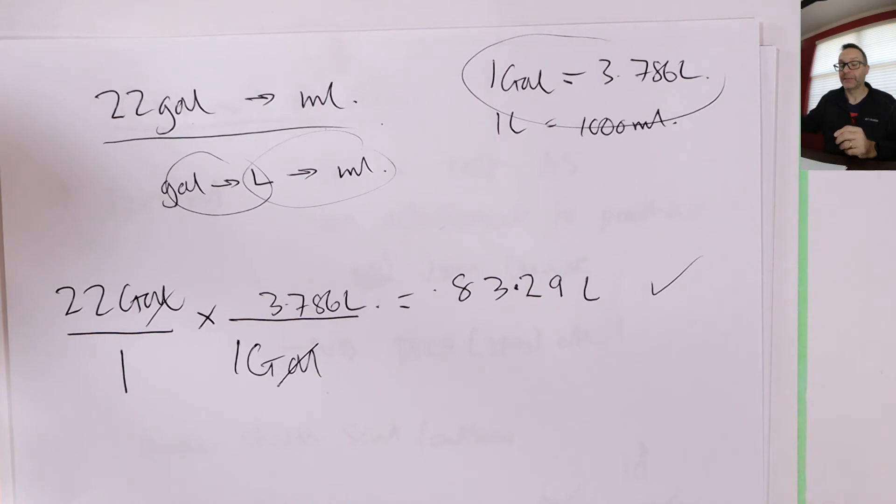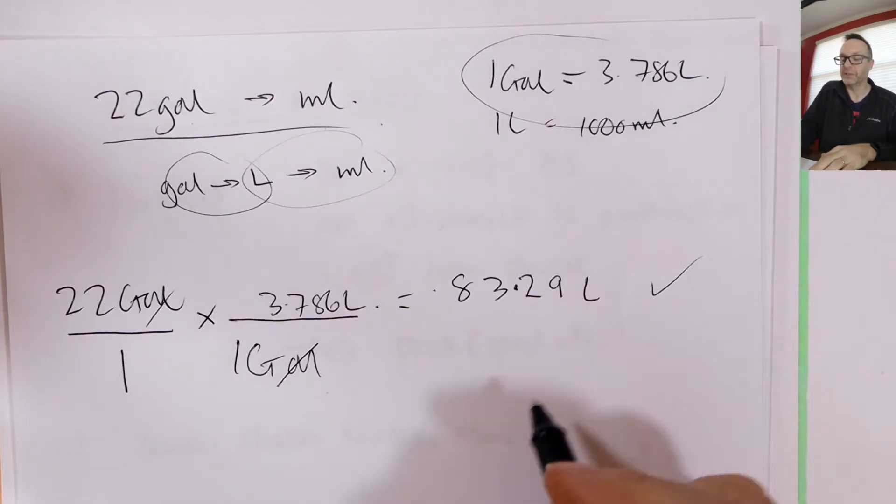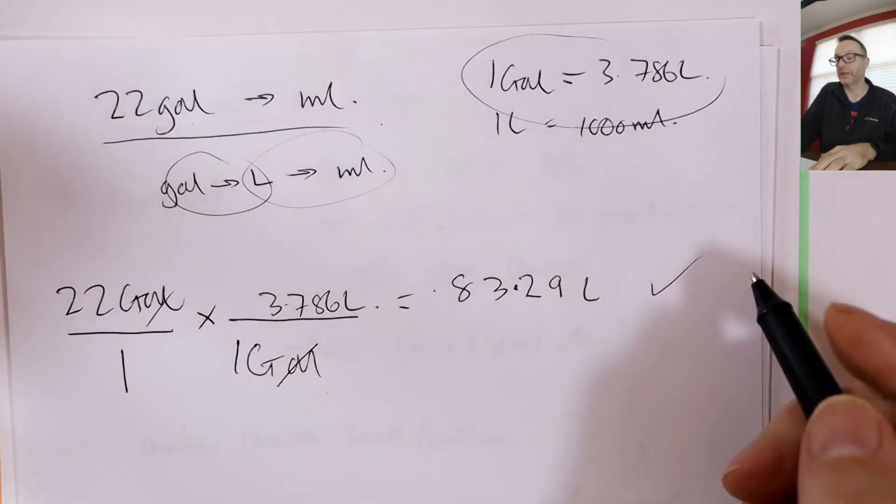Okay. So 22 times 3.786. 83.2 sig fig. Well, I'll do the sig figs at the end. That's another area we've got to talk about. That, as written, is correct. Okay. That, as written, is correct. But it doesn't answer the question, does it? So this is true. This statement is true. If I write that, that's true. However, what people say then is, well, oh, wait a minute.